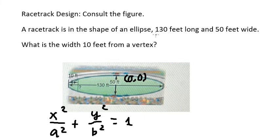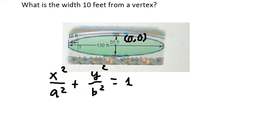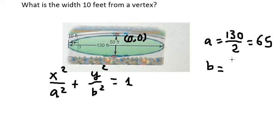Next, we have 130 feet long and 50 feet wide. So we can find the value of a. We use a equal to 130 divided by 2, so we have 65. B equals to 50 divided by 2, so we have 25.